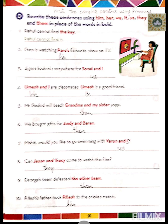Number three: Jigmeh looked everywhere for Sonal and I. Since Jigmeh was looking for both of us, we use 'us.' Sentence: Jigmeh looked everywhere for us. Number four: Umesh and I are classmates. Umesh is a good friend. Since Umesh and I are together, we use 'we.' We are classmates. And for Umesh alone, we use 'he.' He is a good friend.